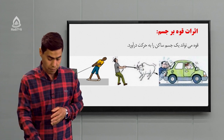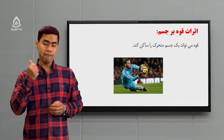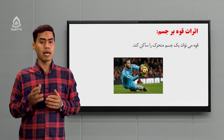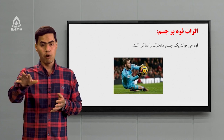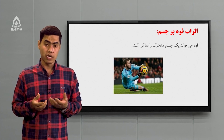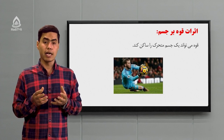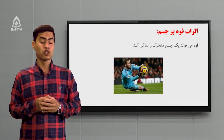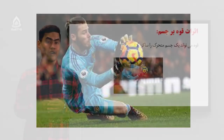تأثیر دوم: قوه می‌تونه یک جسم متحرک را ساکن کنه، یعنی خلاف حالت قبلی. مثال بزنیم: وقتی که شما سوار موترسایکل‌اید یا با بایسیکل خودتان طرف مکتب می‌رید یک مانع جلویتان می‌بینید، بریک می‌کنید. وقتی که بریک انجام می‌دید، بایسیکل شما متوقف می‌شه. در این حالت می‌گیم که یک جسم متحرک با وارد کردن قوه ساکن کردیم. مثلاً در بازی فوتبال هم همینطور.